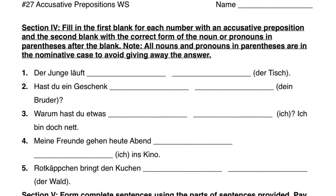Now let's try using these. We're supposed to fill in the blank with a preposition that makes sense, and then also fill in the word in parentheses — which is given in the nominative case and must be changed to the accusative case. Accusative prepositions are really easy: whatever comes after them is accusative. Nummer eins: 'Der Junge läuft blank blank' — the boy is walking around the table. We say um den Tisch. Der Junge läuft um den Tisch.